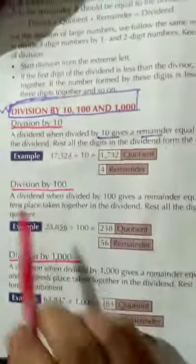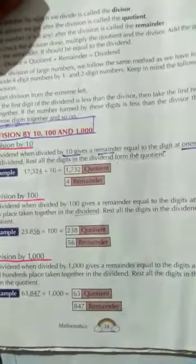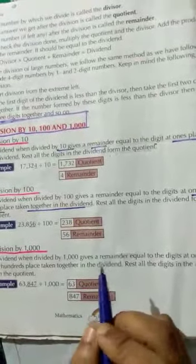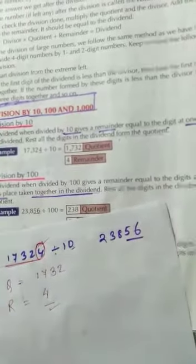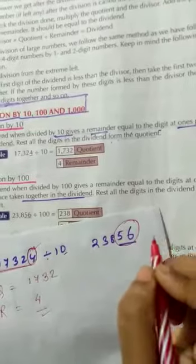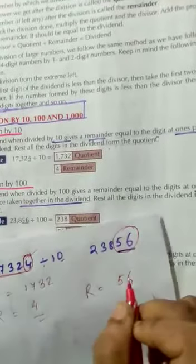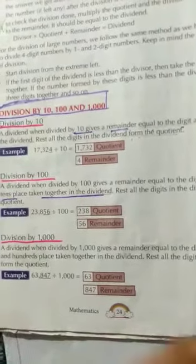Division by 100: when a dividend is divided by 100, the remainder equals the digits at the ones place and tens place together. For example, 23856 divided by 100 gives remainder 56 (the last two digits) and quotient 238 (the remaining digits). So two digits form the remainder because 100 has two zeros.